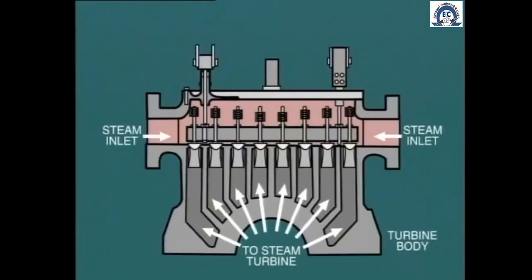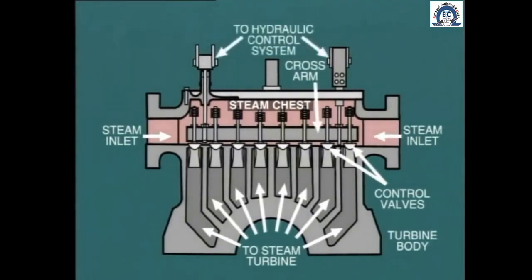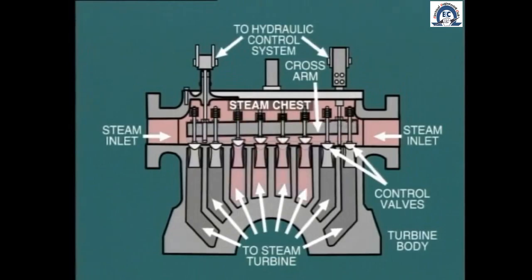In most turbines, multiple control valves are used, as shown here. In this particular arrangement, the steam chest is located above the high-pressure end of the turbine shell. We can see here eight valves, and these are opened in sequence according to the position of the crossarm, which is itself adjusted by the hydraulic control system. These control valves are set in such a manner that only one valve at a time is actually throttling steam, while the others are either fully open or closed, depending on the actual load.